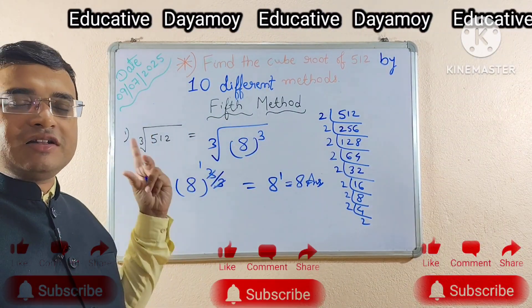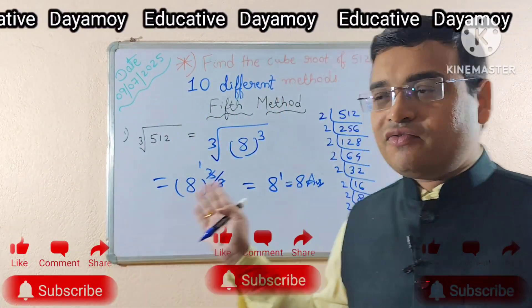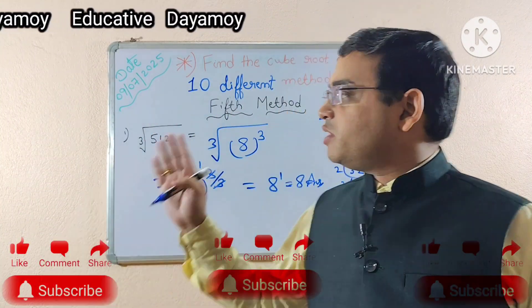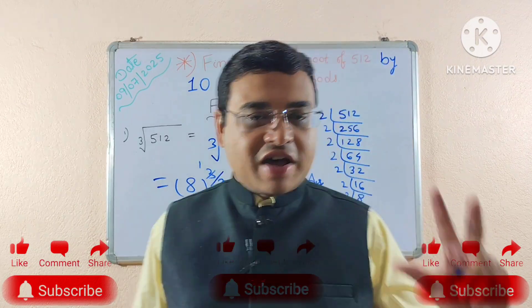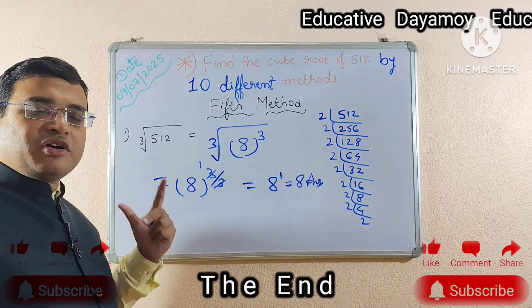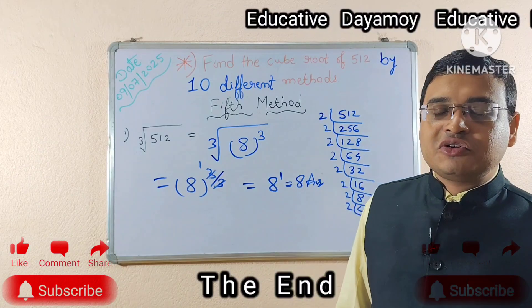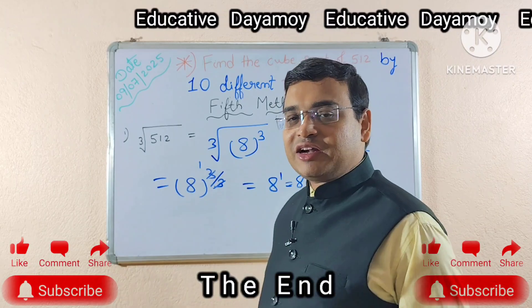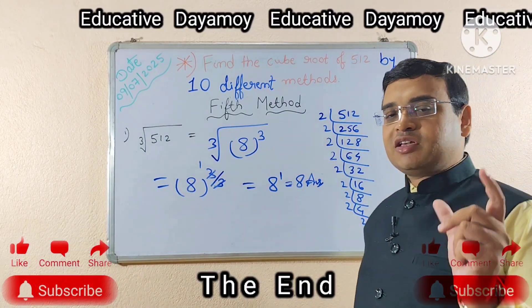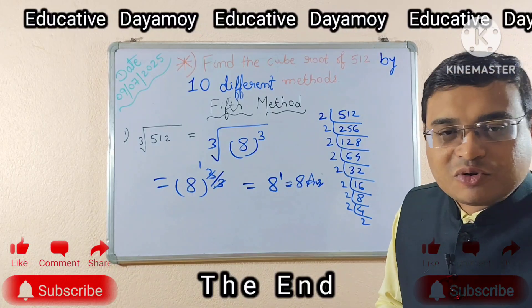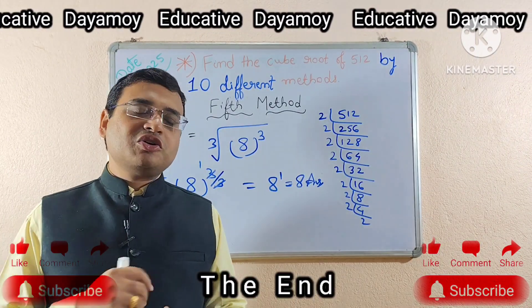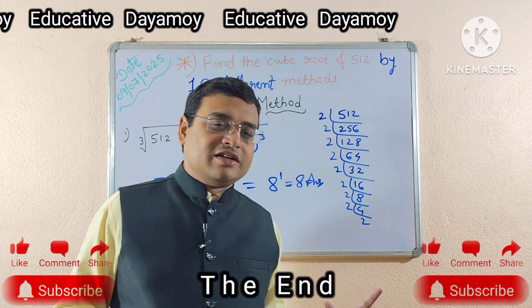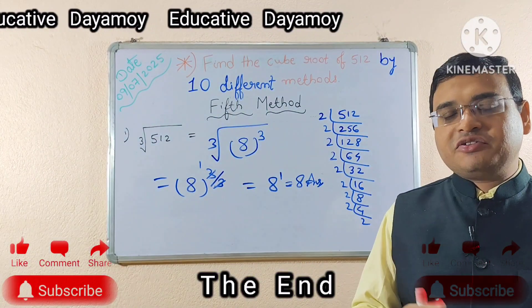The other methods I will show you in the second part of this video. So stay tuned for my second part to know the complete 10 different methods of finding the cube root of 512. If you have liked my video and found it useful, then do share it with everyone in your contact. Don't forget to leave a comment in the comment box and also give a like so that I get the motivation to upload more such videos. And also don't forget to subscribe the channel if you are new. So till then, see you in the next video. Stay tuned. Bye bye.